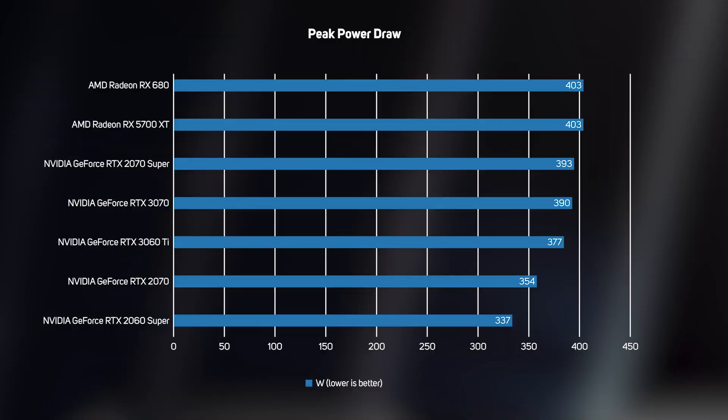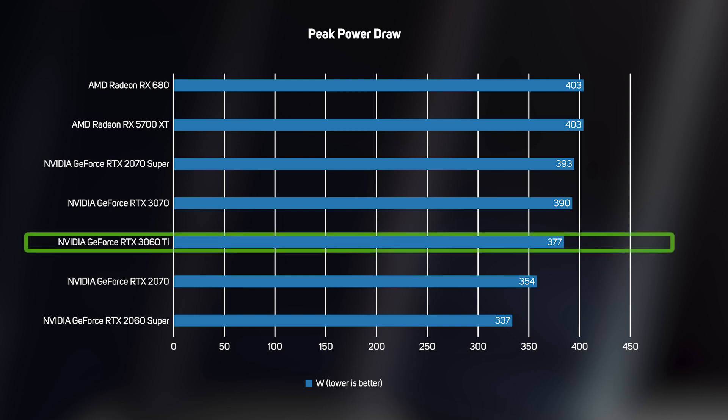Despite significant improvements in power efficiency from the latest AMD and NVIDIA graphics cards, there's no getting away from the fact that they are power-hungry beasts. Our test system drew a peak of 377 watts from the wall, with the RTX 3060 Ti far from the worst result, so a mid-range power supply of around 600 watts will be optimal.